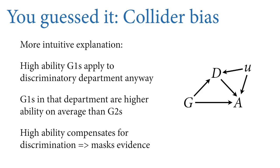Here's a more intuitive way to think about this. In this particular example, high ability gender 1 individuals — women — apply to the discriminatory department anyway because they know their high ability and they're willing to do it. They think they can overcome the discrimination. And they're right. Gender 1 individuals in department 2 are higher ability on average than the gender 2s in that department, even though they're discriminated against. Since they're higher ability on average, they're more likely to get admitted. Most of them get admitted and their admissions rates are quite high. Their high ability, in essence, compensates for the discrimination. So when we run a statistical model that ignores the ability differences among individuals, it masks the evidence of discrimination.